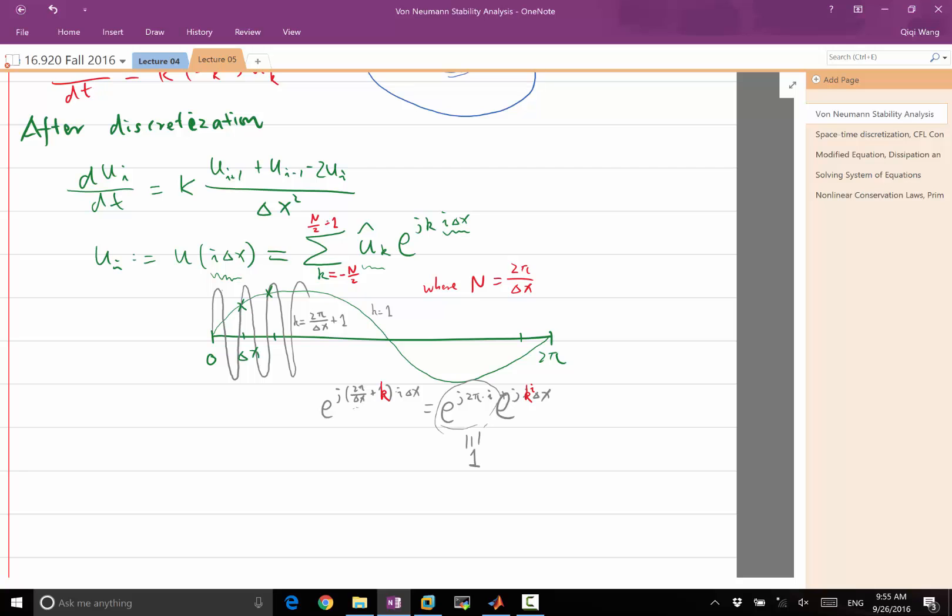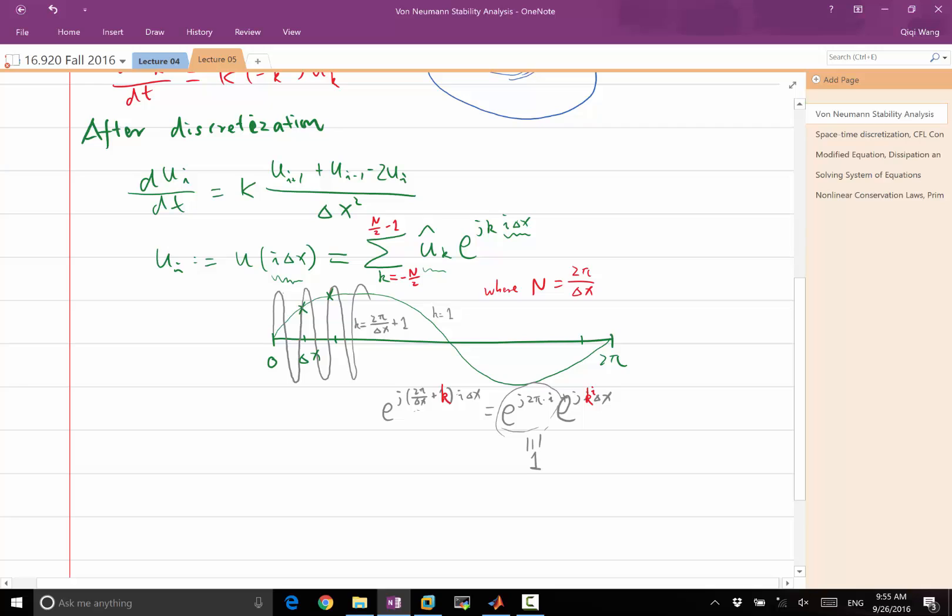And why is it called aliasing? Anybody play video games? Some people. So when you draw a texture, when you have a 3D video game and you draw a certain texture very, very far away from you, the texture is going to contain frequencies that is going to be under-resolved on the screen.